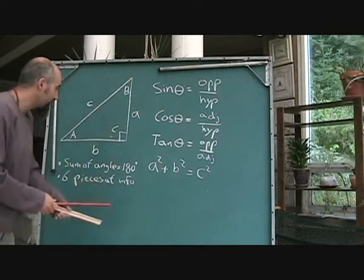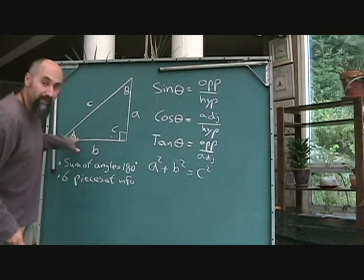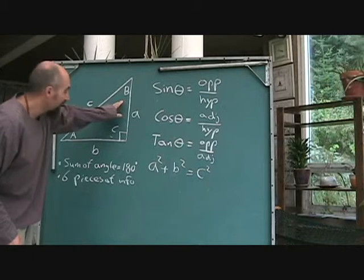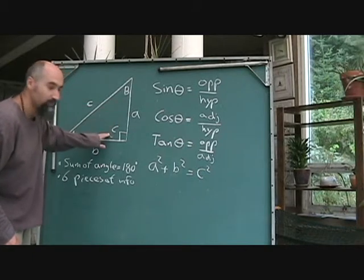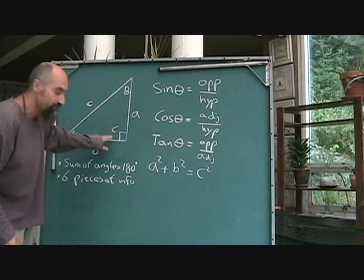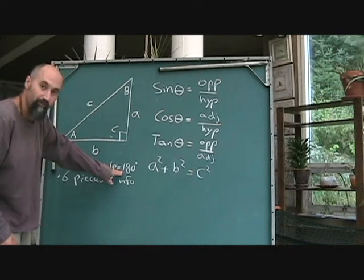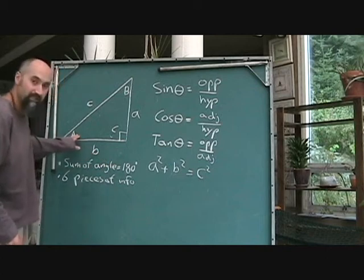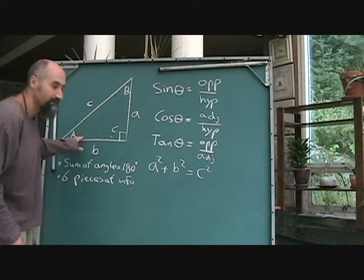Now with triangles, the things to keep in mind is the sum of the angles is equal to 180. So if this one's 30 degrees and this one's 90 degrees, 30 plus 90 is 120. You subtract that from 180, 180 minus 120 is 60. So automatically you know what this angle is.